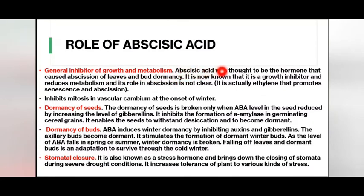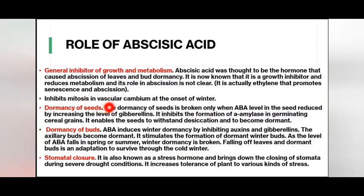Role of abscisic acid as a growth inhibitor: abscisic acid was initially thought to be the hormone that caused abscission of leaves and bud dominance. It is now known that it is a growth inhibitor that reduces metabolism, and its role in abscission is not clear. It is actually ethylene that promotes senescence and abscission. Abscisic acid inhibits mitosis in vascular cambium at the onset of winter.